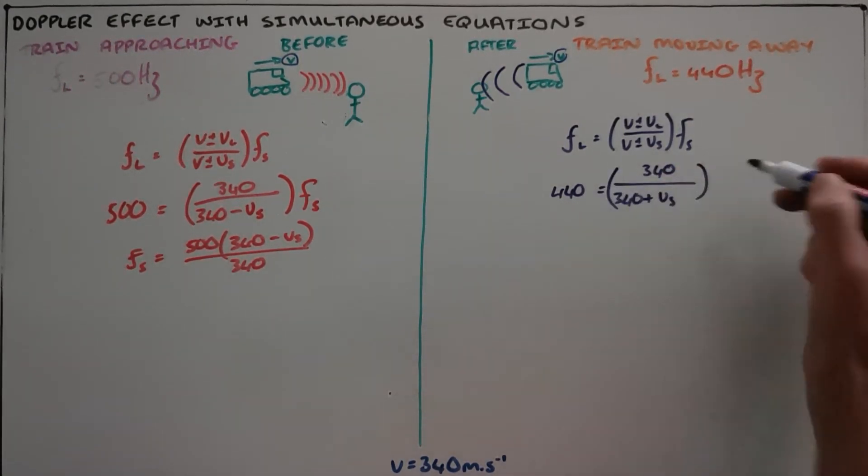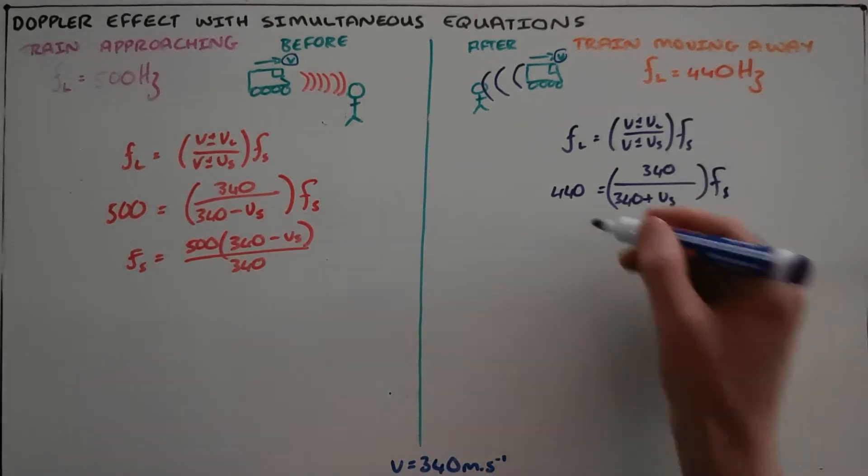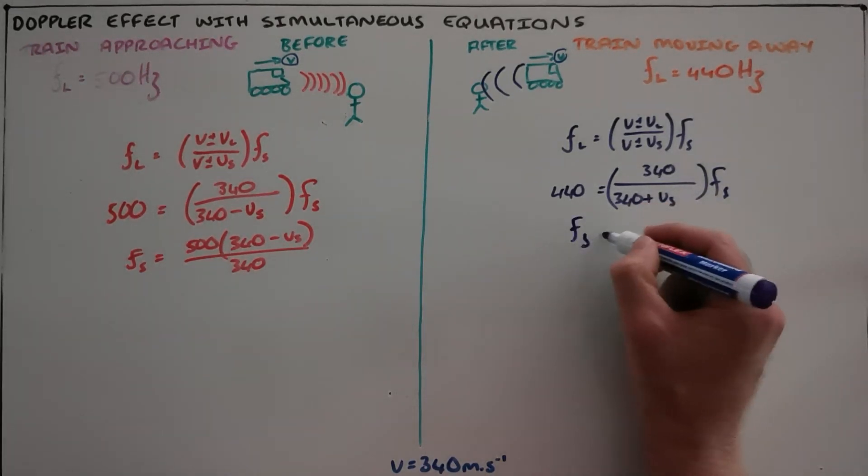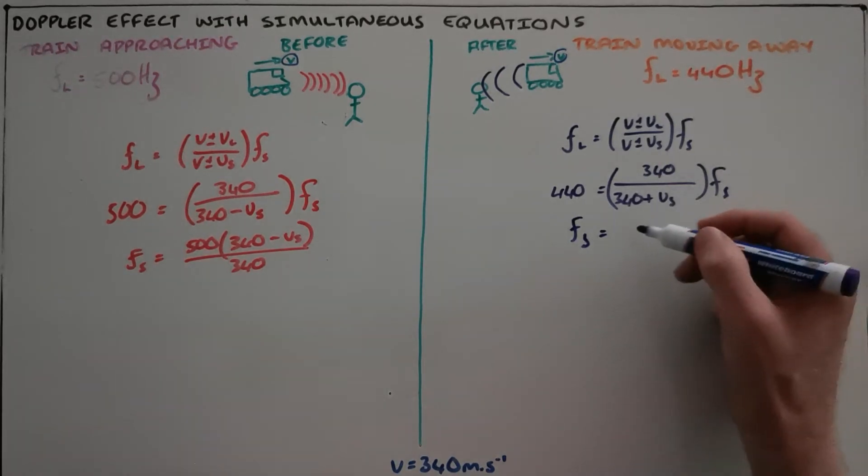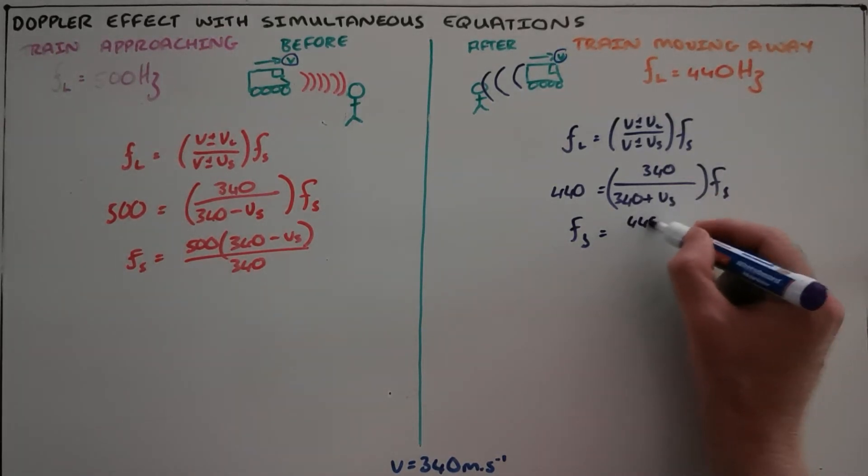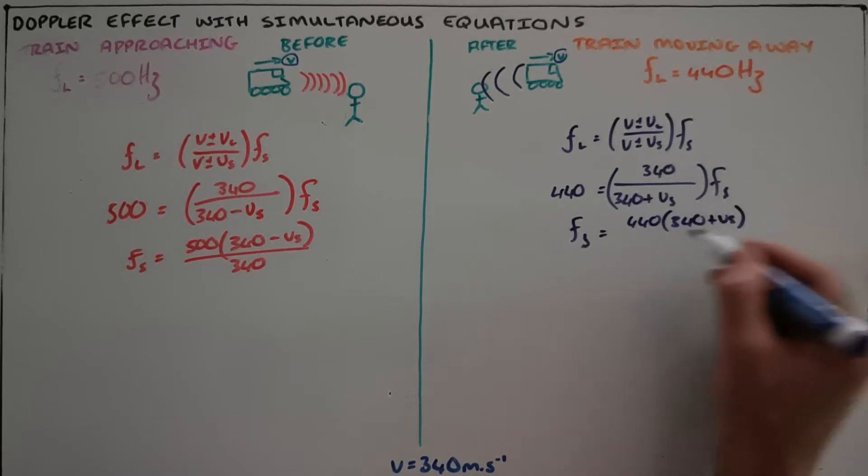And then again, the frequency of the source being unknown, this can then also be rewritten as frequency of the source is equal to 440 multiplied by (340 + vs) over 340.